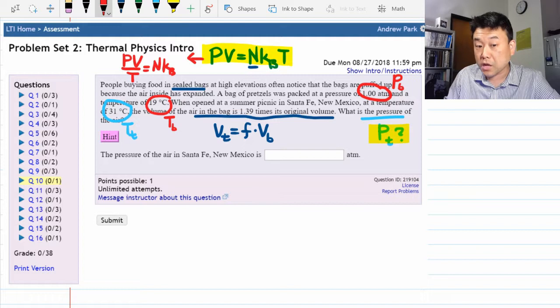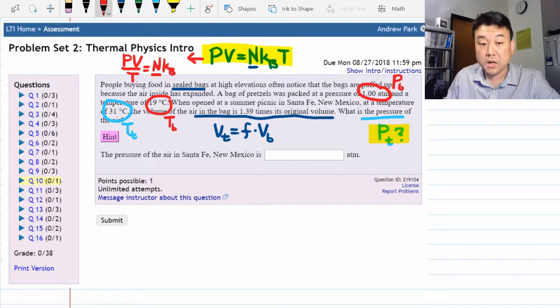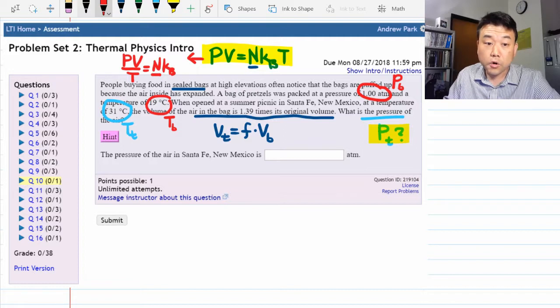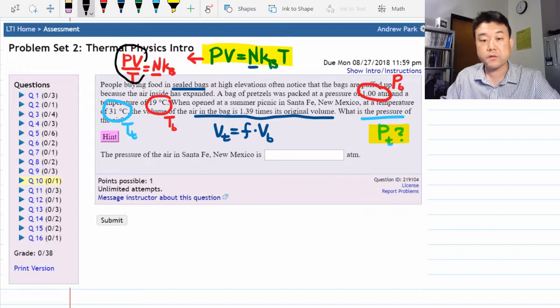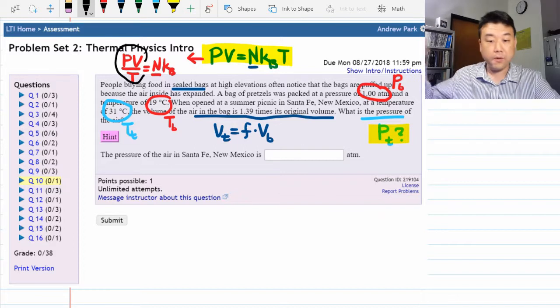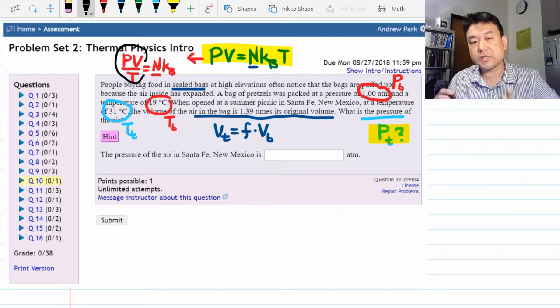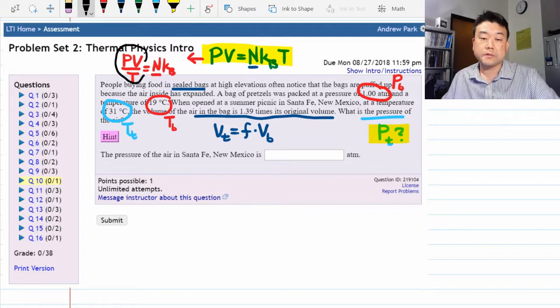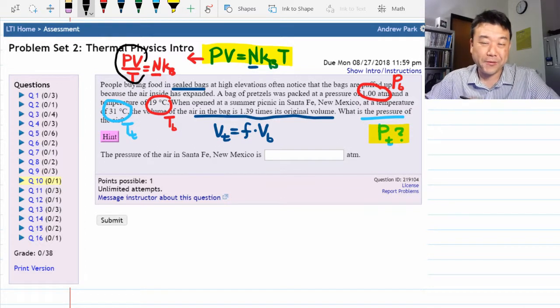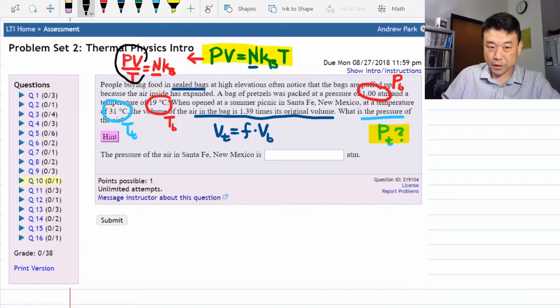N could potentially change, but in many questions it doesn't. So in the questions where N doesn't change, the right-hand side is constant. Meaning the combination of quantities on the left-hand side under one situation at the bottom near sea level has to be the same as at the top where you're doing the summer picnic. So that's what I mean you would use this like a conservation law, even though it's not technically. So I hope you remember how to apply conservation law from physics 4a. Let me give you a quick refresher.